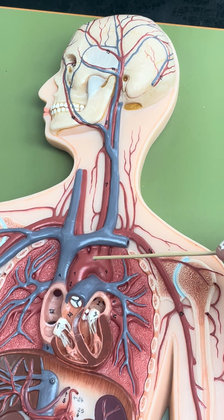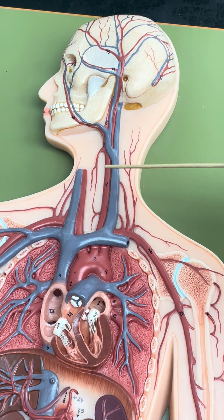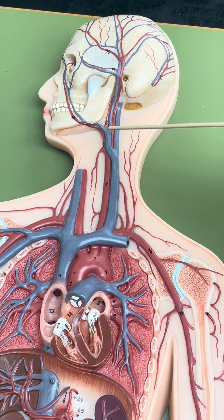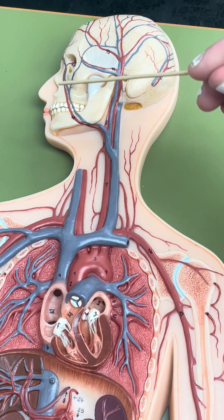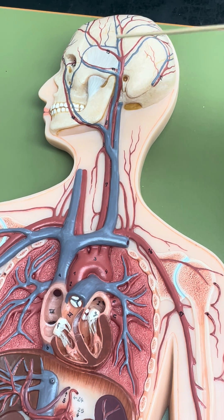The second branch coming off of the arch of the aorta is going to be our left common carotid artery, that is going to travel up the neck to the head and face, and then branch into our external carotid artery, supplying the external structures of the face and scalp.